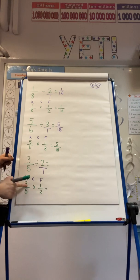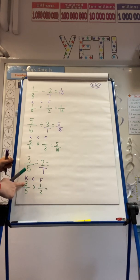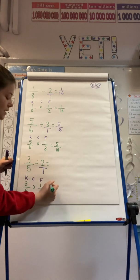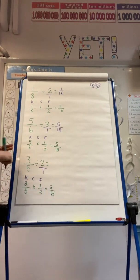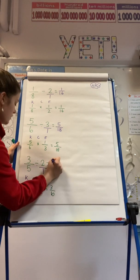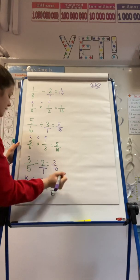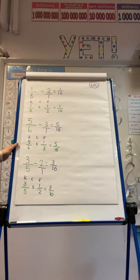So we're looking at 3 fifths times 1 half. Remember, multiply your numerators together and multiply your denominators. So 3 times 1 is 3, and 5 times 2 is 10. So I know that 3 fifths divided by 2 is 3 tenths.